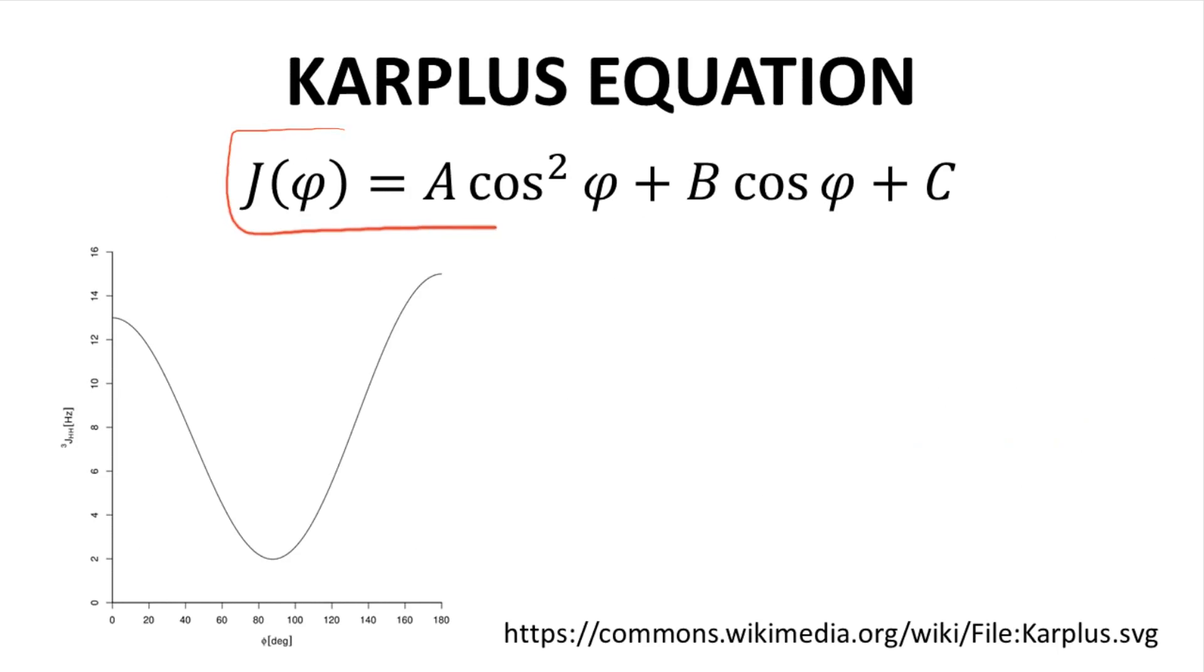Across the top of the screen is the general form of the Karplus equation. The J value is a function of the dihedral angle between two hydrogens, and the equation incorporates trigonometric functions. For a dihedral range of 0 to 180 degrees, you can see that the observed J value can vary widely from as high as maybe 15 Hz all the way down to 2 Hz.